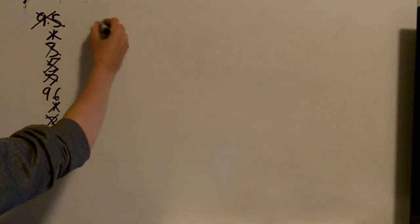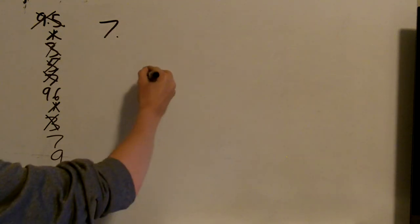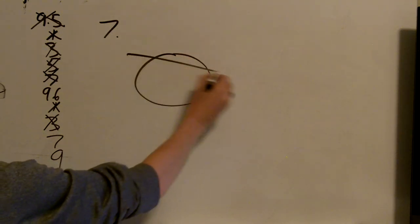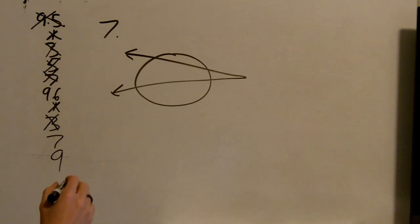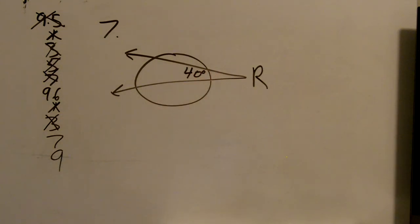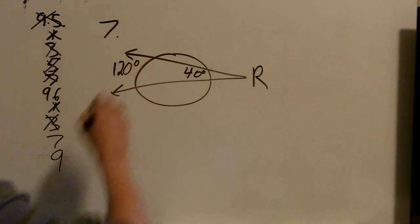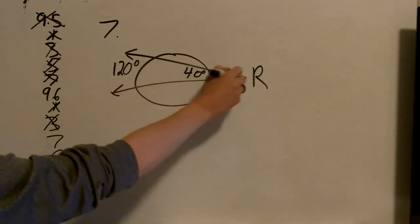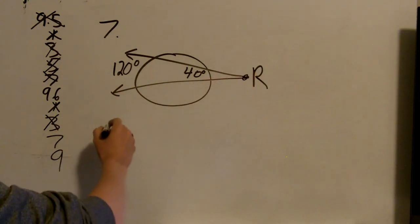For number 7. So we keep asking ourselves, is it in, on, or out? For this one, we want to know what angle R is. And we know that this little section is 40 degrees. This bigger section is 120 degrees. So from here, I notice that this is outside, where those two meet is outside.